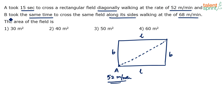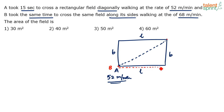What does the other person B do? B took the same time — 15 seconds — to cross the same field along its sides. Let me show this in a different color. A has crossed it diagonally. B starts from the same point and crosses the field along the sides, so he also has to reach the same destination but along the sides. B first covers the length, then takes a 90-degree turn and covers the breadth, reaching the endpoint. B has also taken 15 seconds, and B's speed is 68 meters per minute.